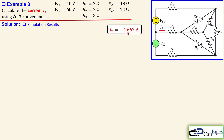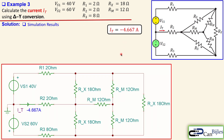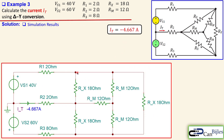We verify this in the circuit simulator. The circuit shows the RX delta configuration, the RM Y configuration, R1, R2, R3, and the two voltage sources. The simulation confirms IT equals minus 4.667 amps, matching our calculation exactly. If you have any questions or comments about these examples, please let me know. See you next time — take care.